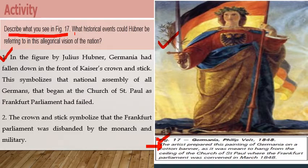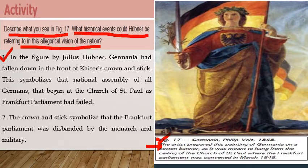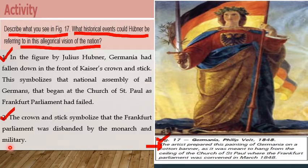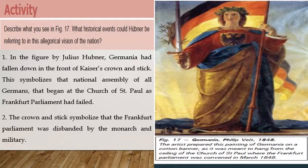In the present figure — Figure 17 by Philip Veit — the attempt to be recognized as a German nation, which had earlier failed, is now represented differently. In this allegorical vision of the nation, the crown and the stick symbolize that the Frankfurt Parliament was disbanded by the monarch and military. This talks about the freedom of the people of Germany from the clutches of the monarchical regime.